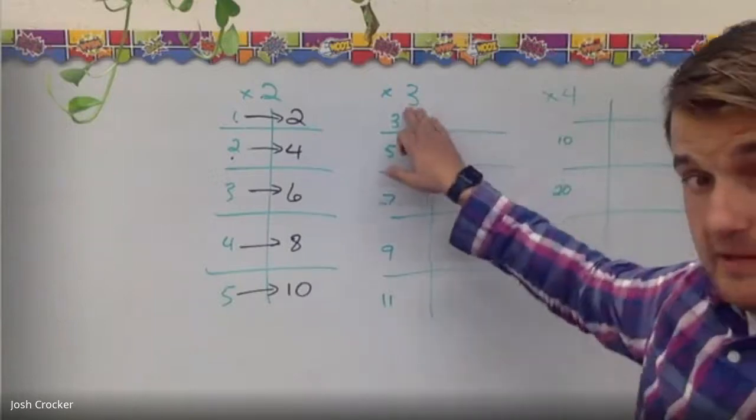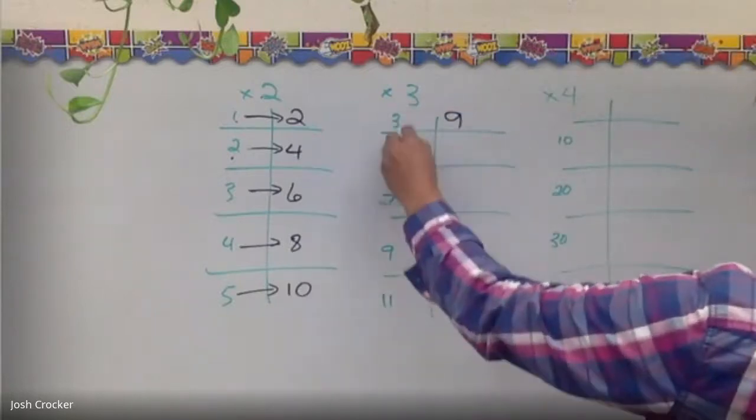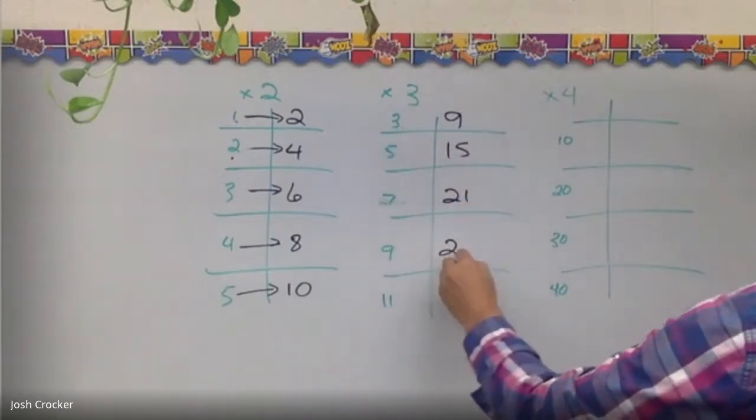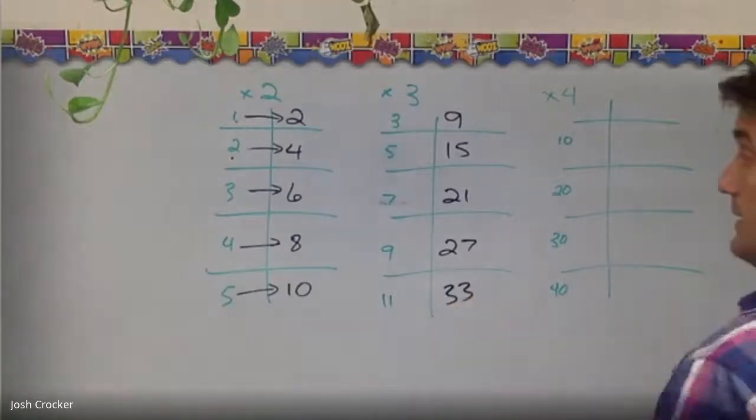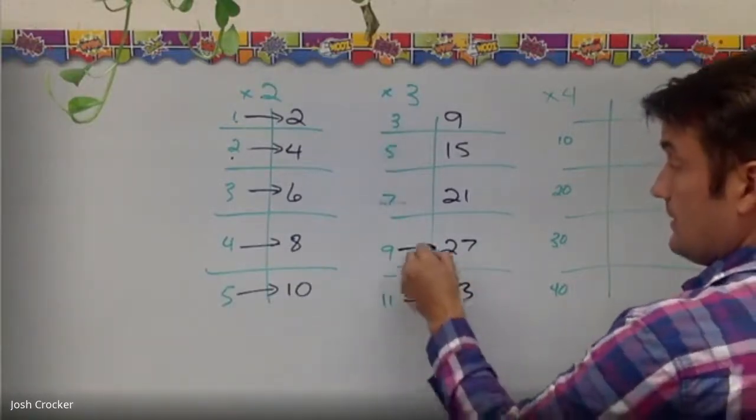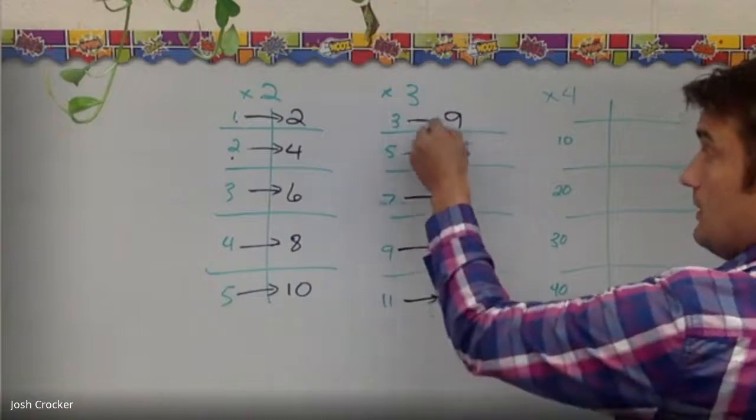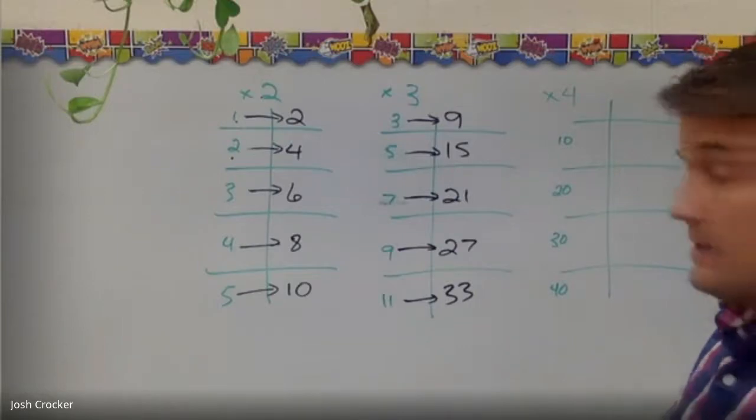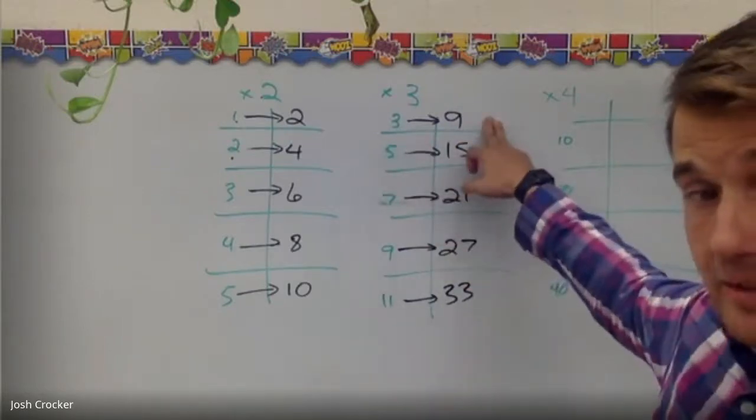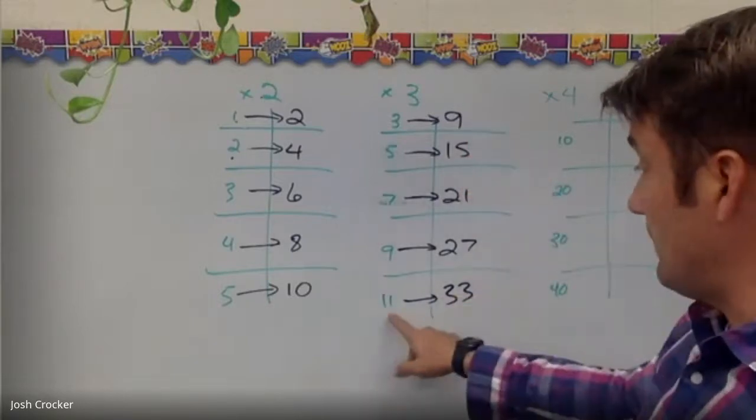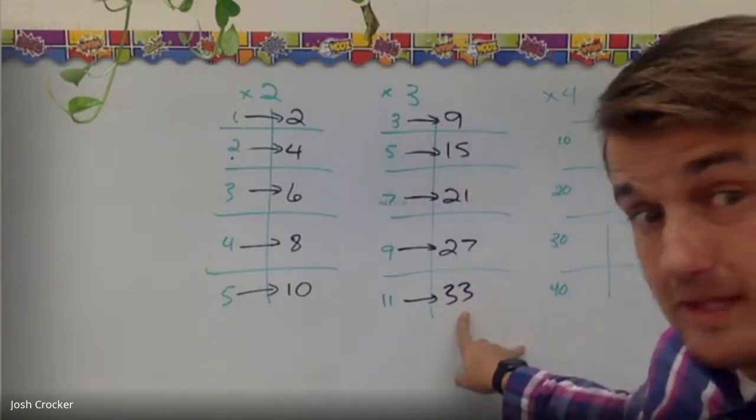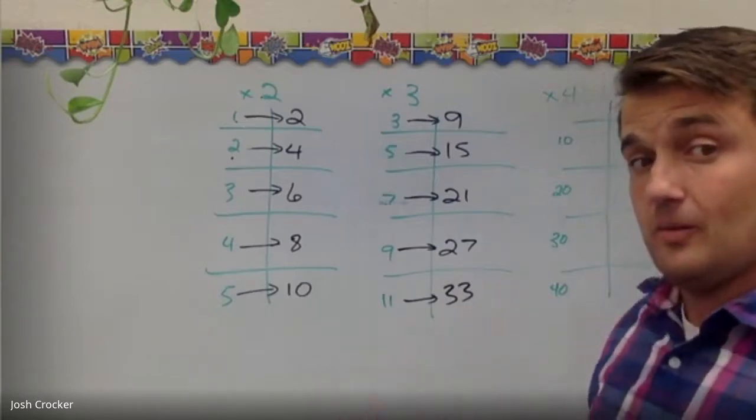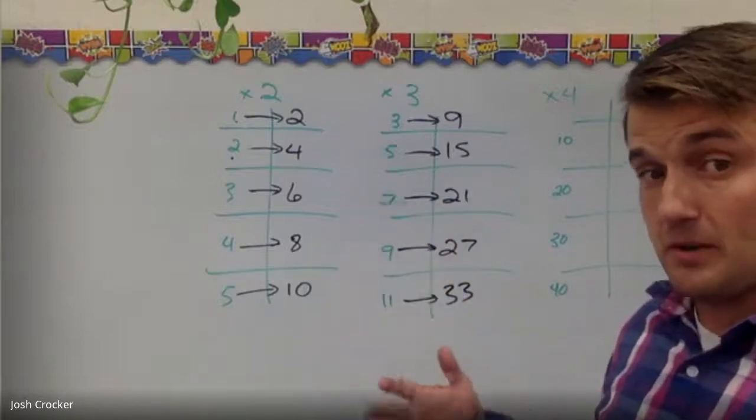Here's one that's times 3. So 3 times 3 is 9, 3 times 5 is 15, 21, 27, and 33. So again we see the numbers went up and we also see that they made larger and larger increases. So from 3 to 9 it went up 6. From 11 to 33 it went up 22. Multiplication makes bigger and bigger jumps happen as you use bigger numbers.